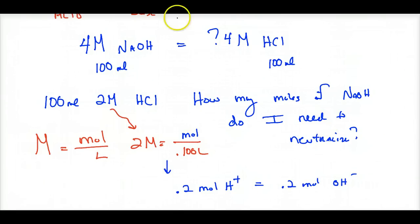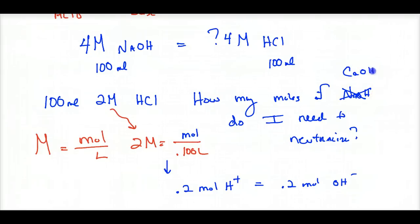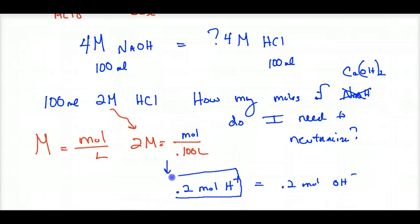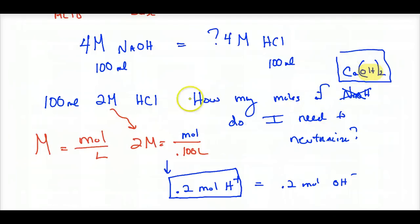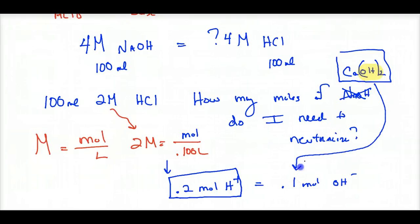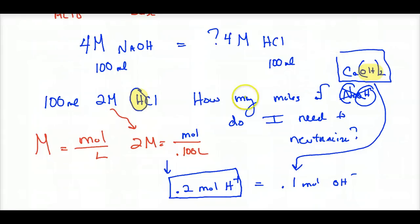If the base were calcium hydroxide Ca(OH)₂ instead of NaOH, it produces twice as much hydroxide. I still need 0.2 moles of OH⁻, but since each Ca(OH)₂ gives two OH⁻, I only need half as many moles of base: 0.1 moles. When the acid-to-base ratio is not 1-to-1, you must account for how many H⁺ or OH⁻ each compound provides.